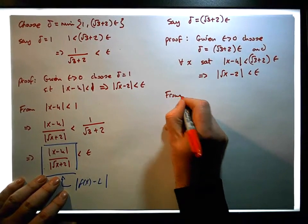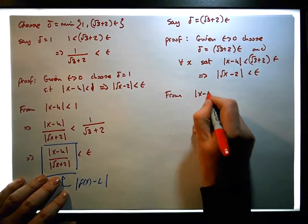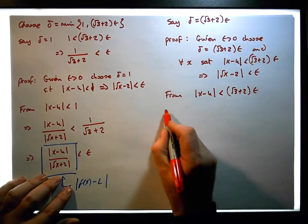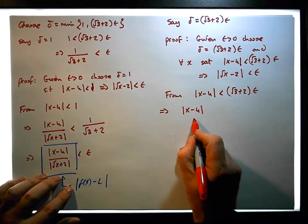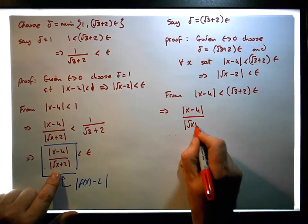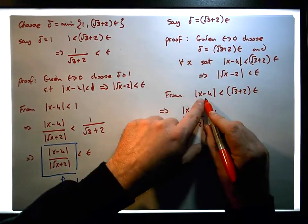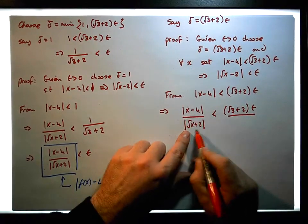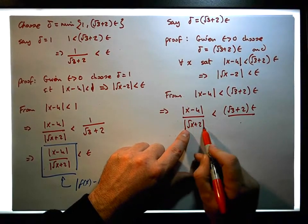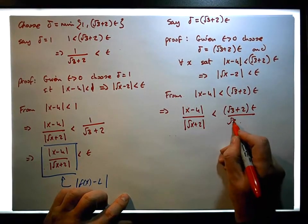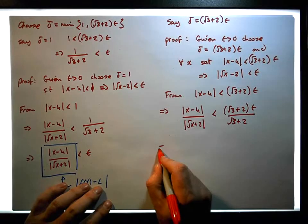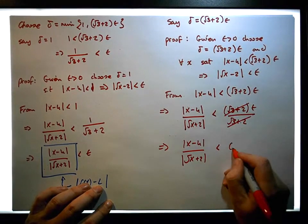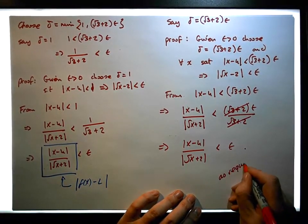From our premise that x minus four is less than delta, and our choice of delta as the square root of three plus two times epsilon, this implies that x minus four all over the square root of x plus two must be less than — well, we know this is less than this, so if we divide by a number smaller than this, namely the square root of three plus two, this implies that the absolute value of x minus four over the square root of x plus two must be less than epsilon, as required. That completes our proof.